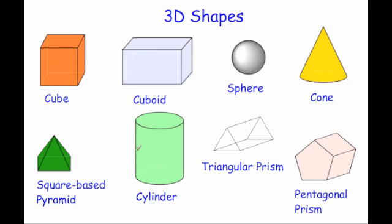Next, a cylinder. A typical cylinder would be something like a Pringles can or some sort of oil drum. It's got two circles — one on the top and one on the bottom — and it's curved around. So that's a cylinder.